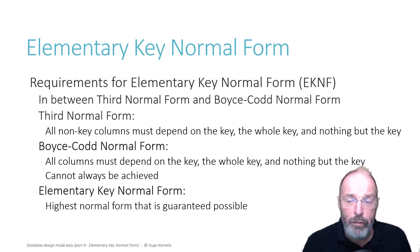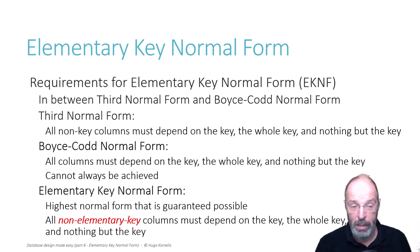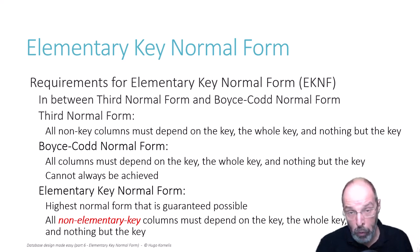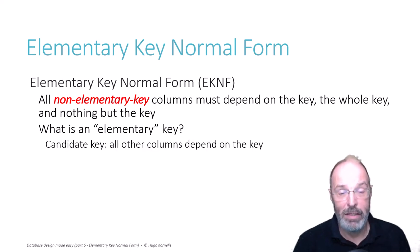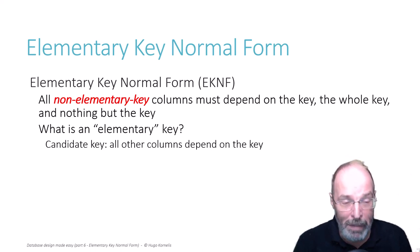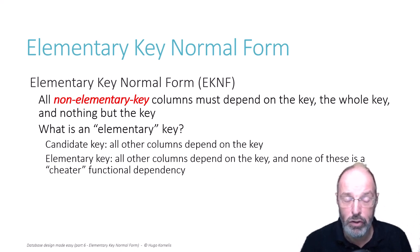The rule for elementary key normal form is that all non-elementary key columns must depend on the key, the whole key, and nothing but the key. So we still have an exception for columns that are part of an elementary key, but not for columns that are part of any non-elementary key. The question then becomes: what exactly is an elementary key? A candidate key is a column or combination of columns where all other columns in the table depend on it. An elementary key is the same, but with the additional requirement that none of those dependencies can be a cheater functional dependency.